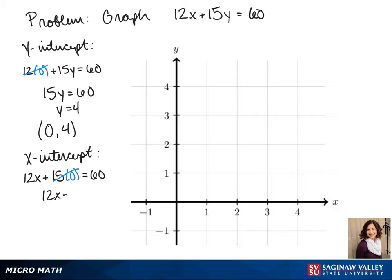We do the same thing for the x-intercept, plugging in 0 for y. We get 12x equals 60, so x equals 5, meaning our x-intercept is (5,0).